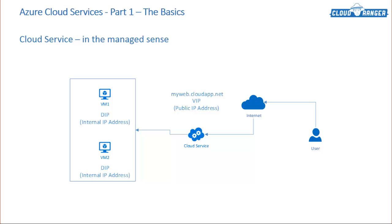In the managed sense, this cloud service diagram shows a cloud service acting as a container for virtual machines, with a user coming from the internet and reaching the public IP address of the cloud service to get to those virtual machines. These workloads could be anything — a domain controller, a SharePoint server, whatever application you put on there. There's no restriction because you have full control over creating these virtual machines and what you put on them. This is more of an infrastructure as a service paradigm.